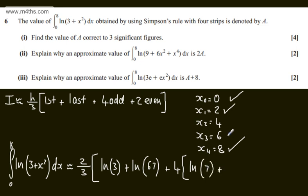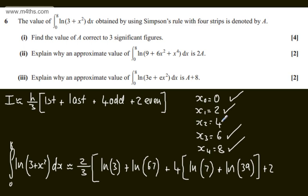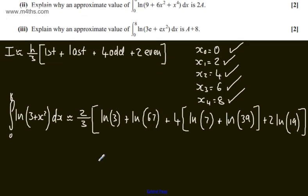The next odd is x₃, when x is 6: the natural log of 6 squared plus 3, which gives 39. Then we add 2 lots of the natural log of 3 plus 4 squared, which gives 2 lots of the natural log of 19. We can use log laws to simplify this, but I'm simply going to put it through the calculator and round my answer to 3 significant figures.